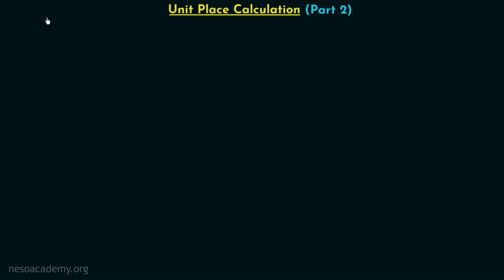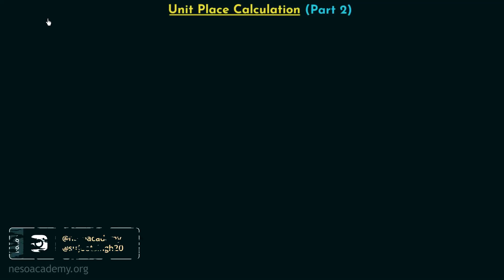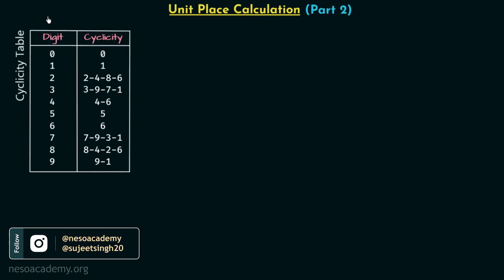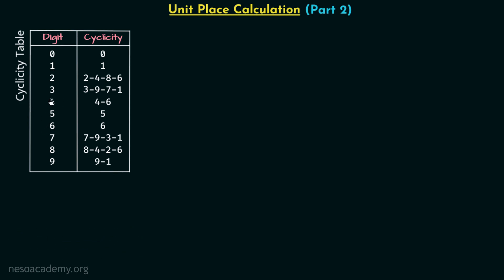In the previous lecture we calculated the digit at unit place with the help of cyclicities of digits zero, one, five, and six. Now in this lecture we are going to find out the digit at unit place with the help of cyclicities of digit four and nine. The cyclicity of digit four is 4, 6 and the cyclicity of digit nine is 9, 1.